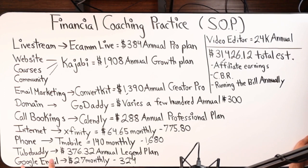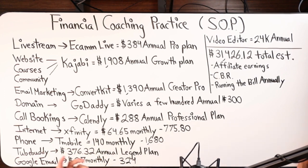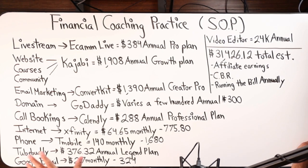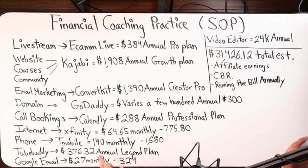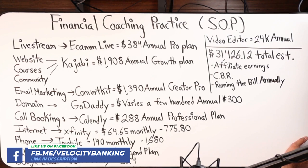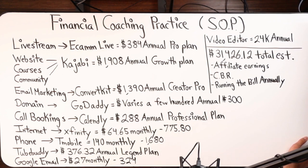TubeBuddy is exclusive for YouTube. It's great for backend analytics — looking at what's trending, hashtags, and a ton of different tools. Even to this day I don't know how to use everything, but I keep it because I'm consistently learning how to grow the channel and grow the presence. TubeBuddy helps you do that. I'm on the legend plan annually at $376.32. I also have two Google email accounts at $27 monthly, so $324 annually.